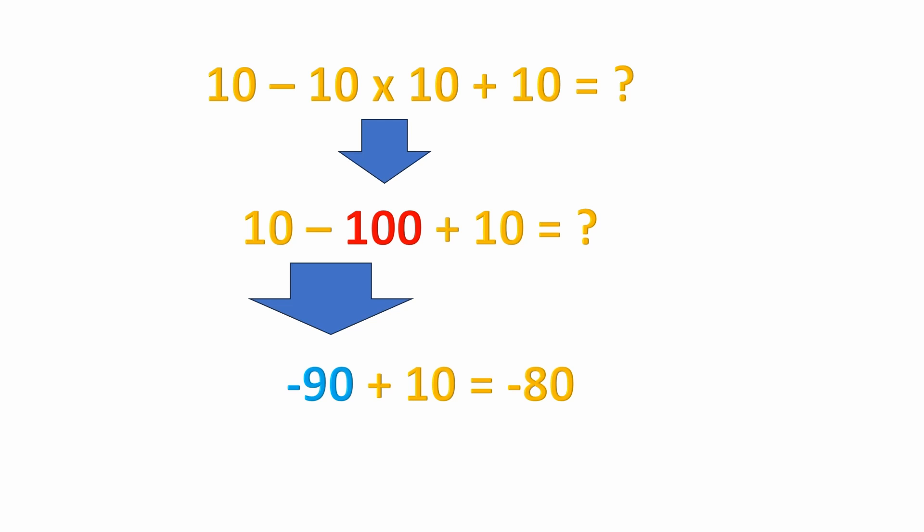Now, some people get really confused here. Remember, you have a minus sign in front of that 10 times 10, so you're ending up with negative 100 or you're subtracting 100. Think of it either way. It doesn't matter. So it's 10 minus 100 plus 10.